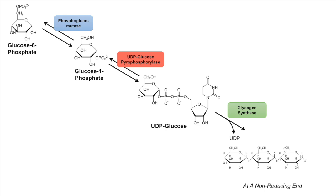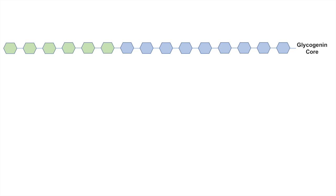All carbons besides carbon-1 are considered non-reducing, and the glucose is added at an alpha-1,4 linkage. Once we have a very long glycogen chain, where do the branching points come from? Glycogen synthase attaches glucose with an alpha-1,4 linkage, but branching points are alpha-1,6 — so how does that happen?